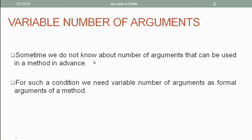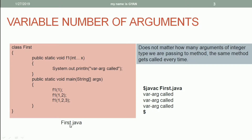Sometimes we do not know about the number of arguments that can be used in a method in advance. For such a condition, we need a variable number of arguments as formal arguments of a method. Here we have the java file first.java. In first.java, we have the class first, which has two methods: f1 and mean. The method mean is calling f1, and f1 is using a variable number of arguments.